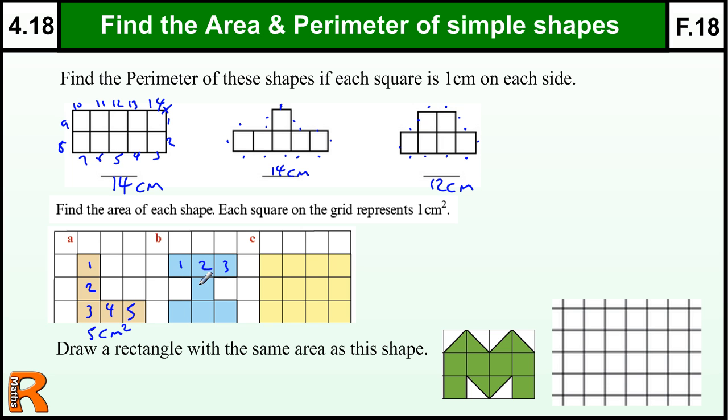1, 2, 3, 4, 5, 6, 7 cm squared, or square centimeters. And this one is 4 by 3, which is 12 cm squared.